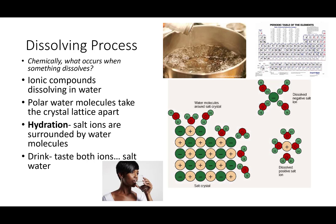Hi folks, let's talk about what actually occurs when something dissolves. So chemically, what's going on with the molecules? What's going on with the ions when something dissolves in something else? Now if you have an ionic compound like table salt and you are putting it in water because you're going to make pasta or you're going to boil potatoes or something like that, chemically what is occurring to make that dissolving process happen?